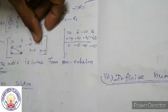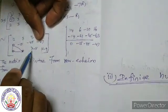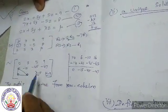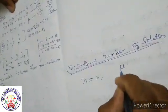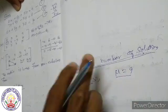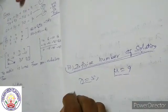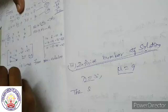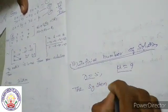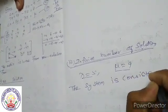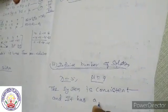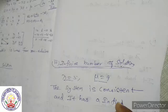For infinite number of solutions: rank of A equals 2, rank of AB equals 2, but number of unknowns is 3. Lambda is equal to 5 and mu is equal to 9. The last row becomes zero. The system is consistent and it has an infinite number of solutions.